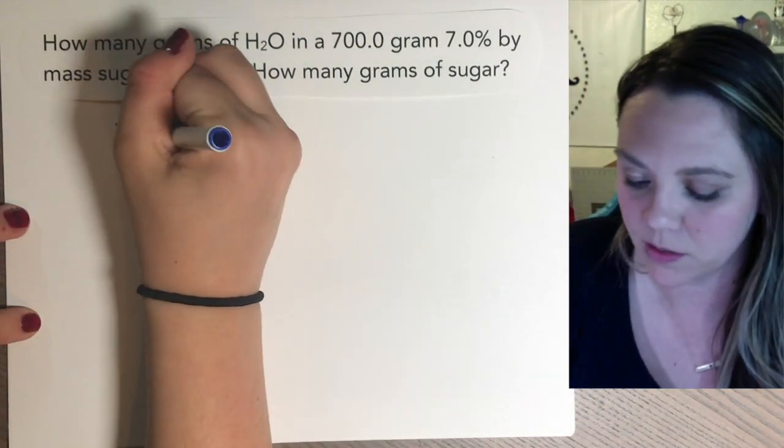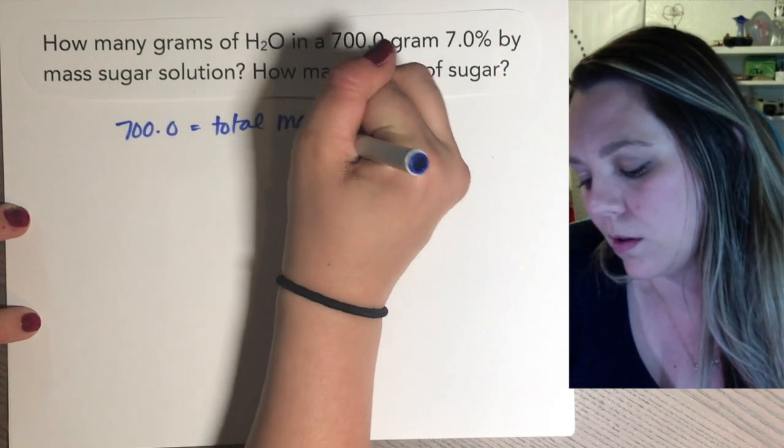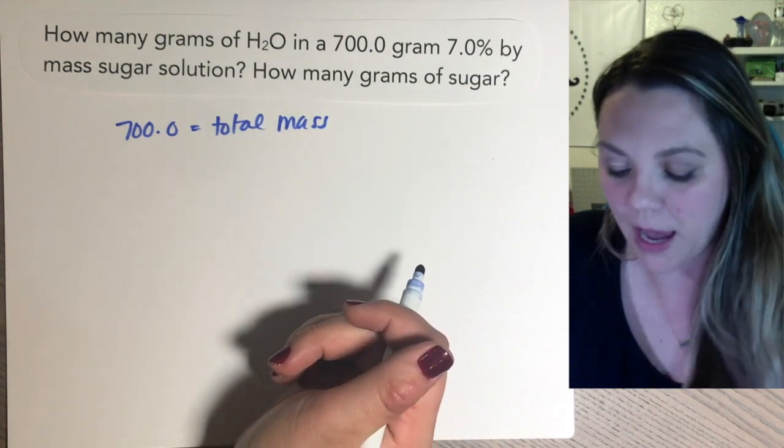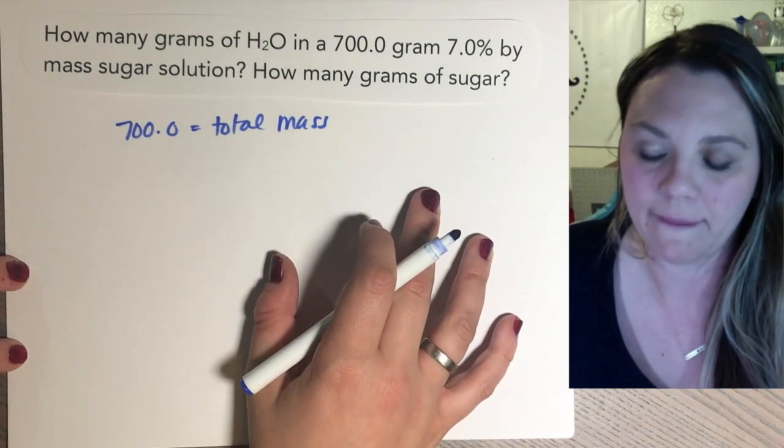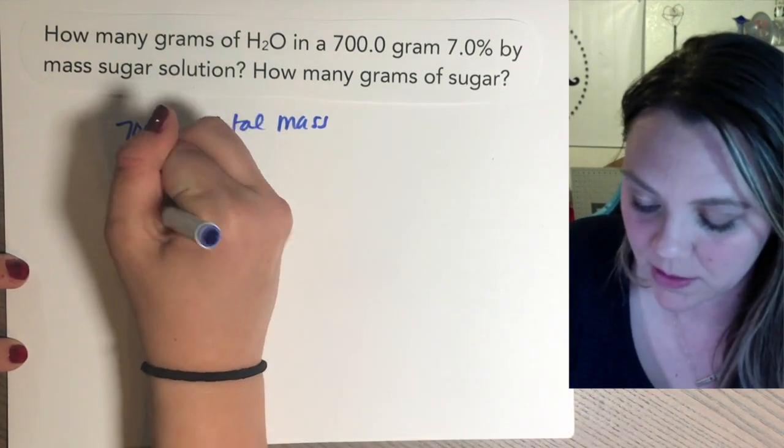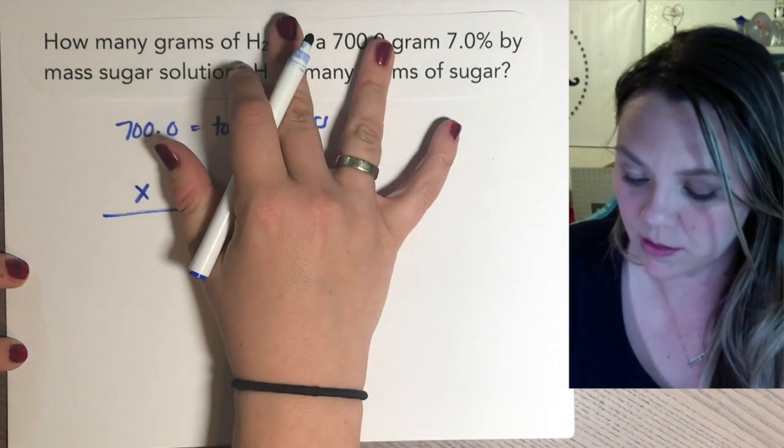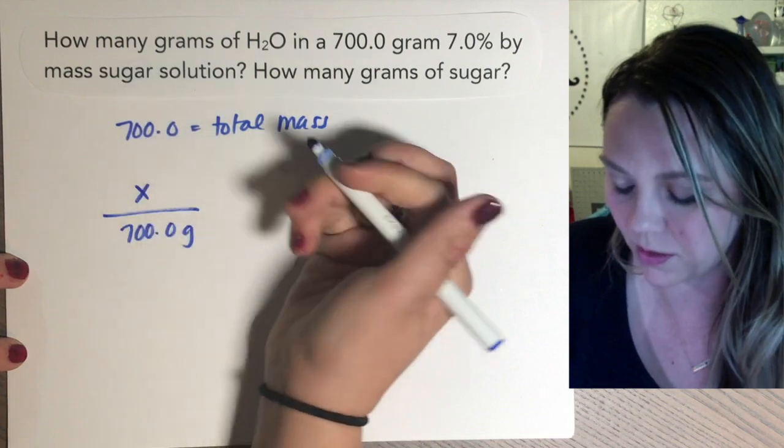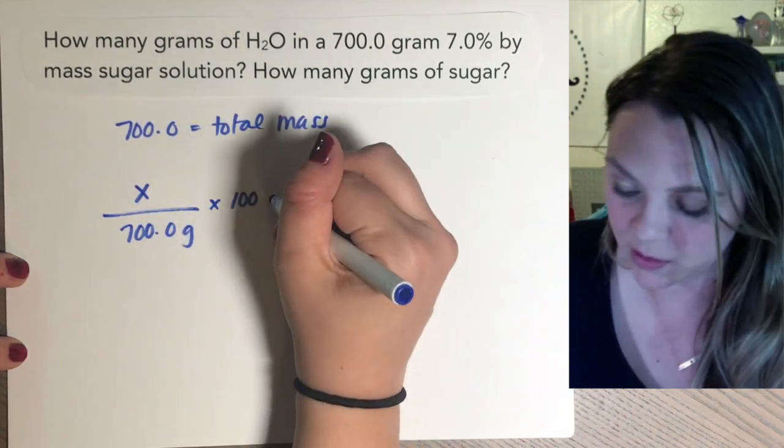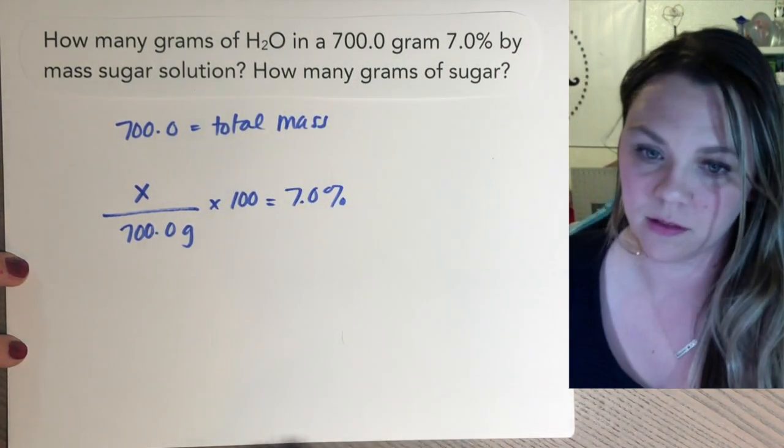Just fine. You just set it up. So 700 is your total mass. And it tells you that, right? And you're trying to figure out now how much out of that total is your solute and your solvent. So some amount of grams of your solute divided by your 700 grams total times 100 is going to equal your seven percent.